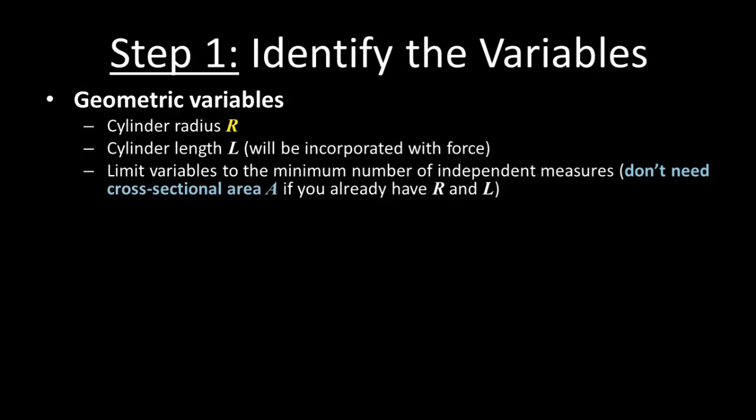Geometric variables are the ones that consider the physical size, shape, and dimensions of the experiment. In our case, there's one relevant geometric variable, which is the radius of the cylinder. We're incorporating length into the dependent variable, force per length. An important note is that the variables you choose should be unique. For example, you might think that cross-sectional area of the object is important. And it may be, but it's not independent of the radius in this case. We can use one or the other, but it would be redundant to use both.